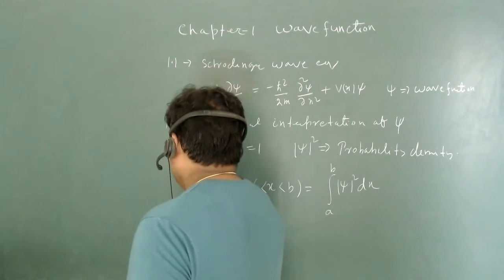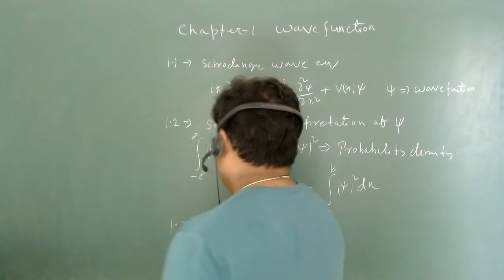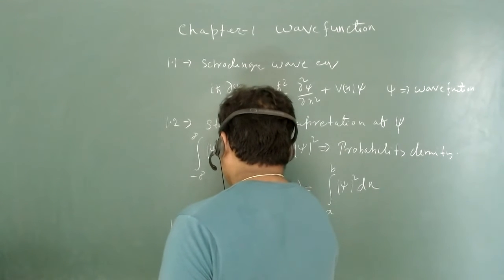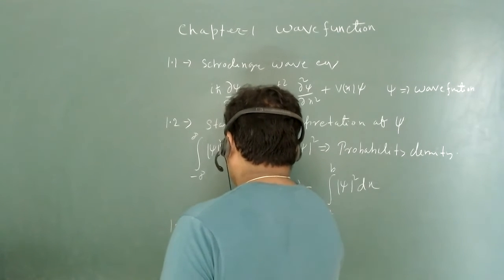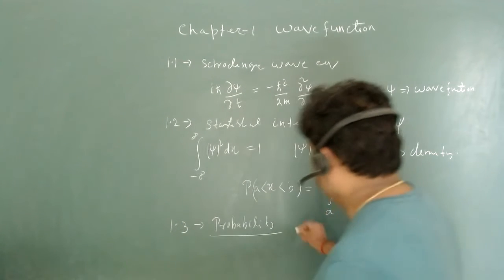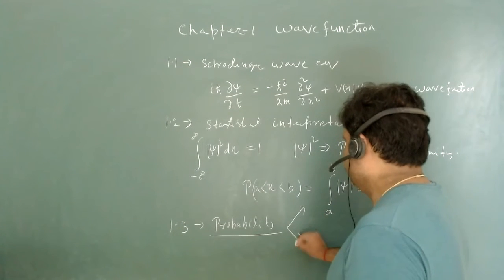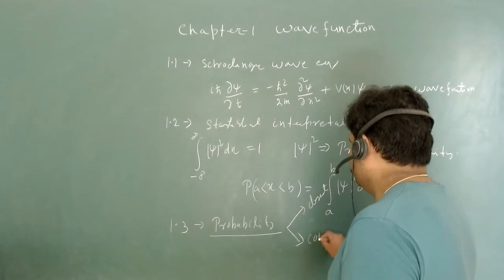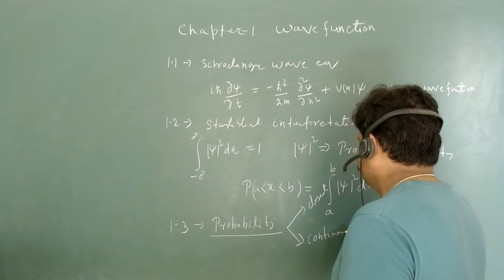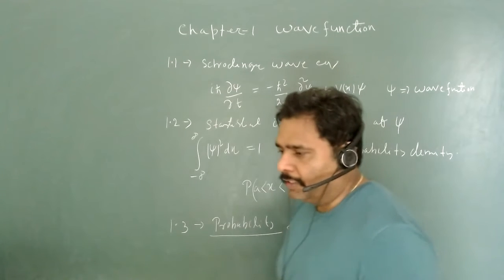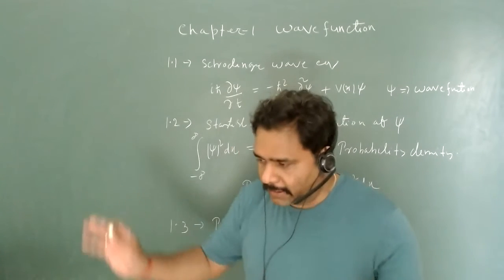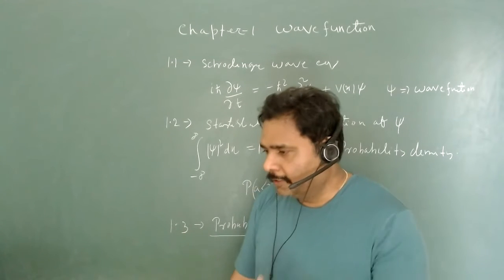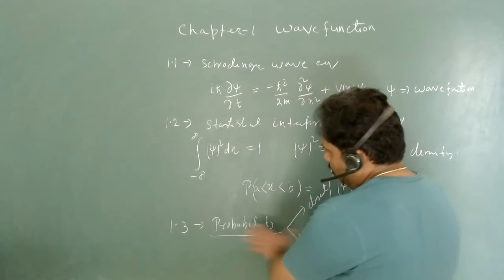Section 1.3 is named as probability, where two types of random variables are discussed: one is discrete and another is continuous. Both of these are random variables, and there are some basic formulas and basic physics associated with them.